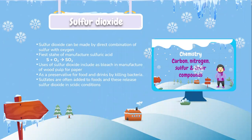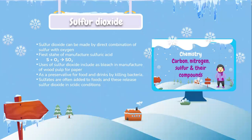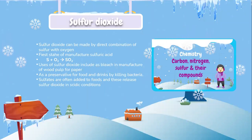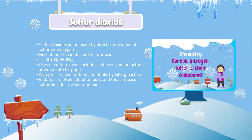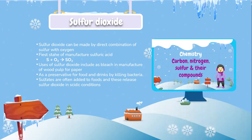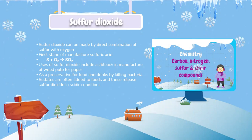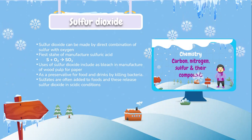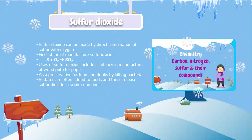Sulfur dioxide can be made by direct combination of sulfur with oxygen — the first stage of manufacturing sulfuric acid: S + O2 → SO2. Uses of sulfur dioxide include as a bleach in the manufacture of wood pulp for paper, and as a preservative for food and drinks by killing bacteria. Sulfites are often added to food and drinks to release sulfur dioxide in acidic conditions.